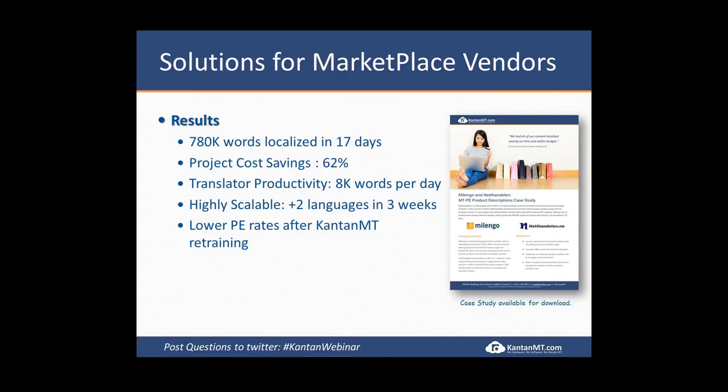They were so impressed with the money they saved that they were able to bring on another two languages using those savings, and those two languages were delivered in an additional three weeks. This client had never used machine translation before and were very skeptical. But in their very first use of the system, customized by partner Malengo, they saved 62% and immediately reinvested that in additional languages, which actually drove demand for more localization. One of the handouts today is the case study that talks in more detail about how this client got these savings.